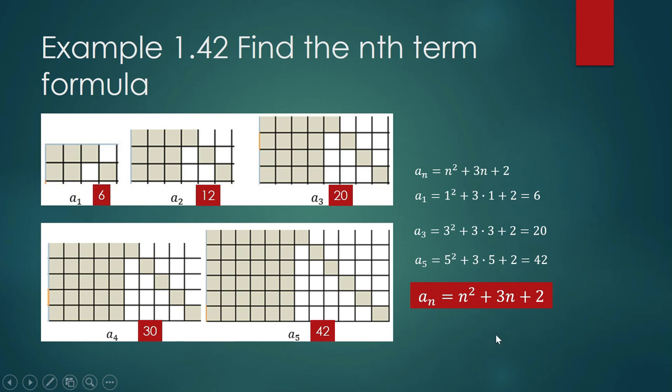This is the general formula that will give us the nth term of this sequence: a_n = n² + 3n + 2.